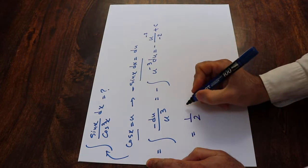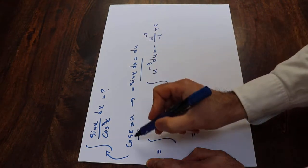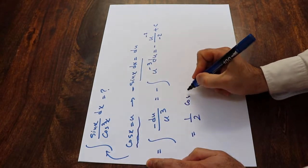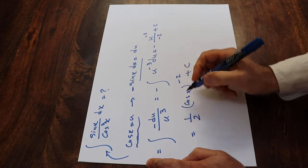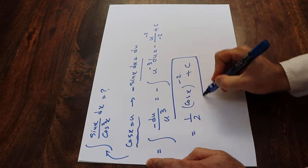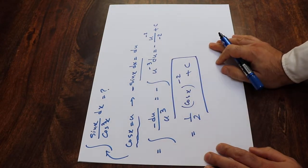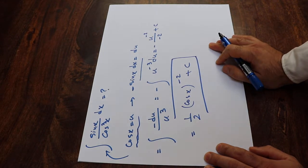Instead of u, now I write the definition of u, that is cosine x, with the power of minus 2 plus c, the constant of the integral. And this is the solution to our integral. I hope you found this video helpful.